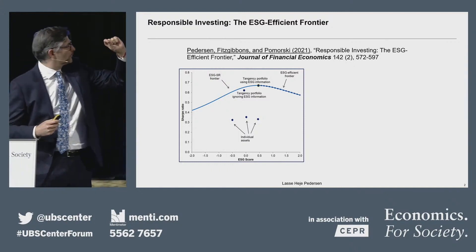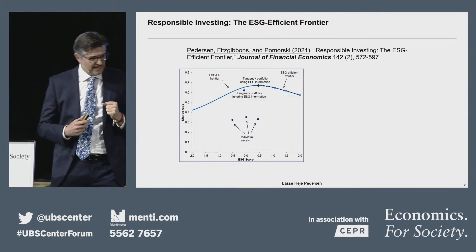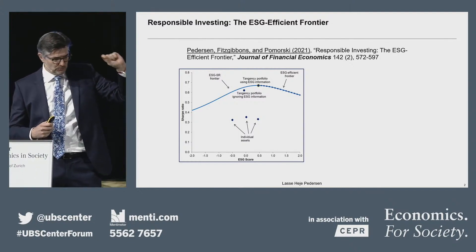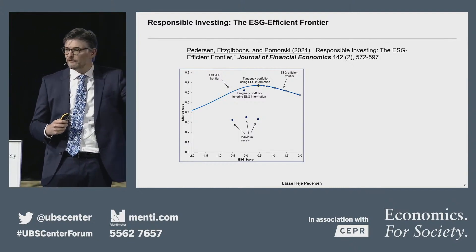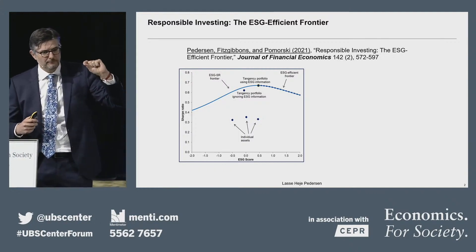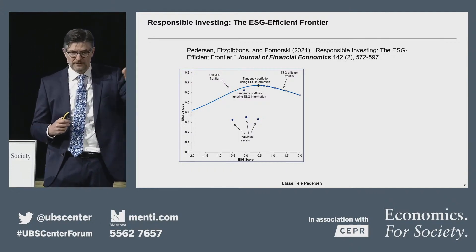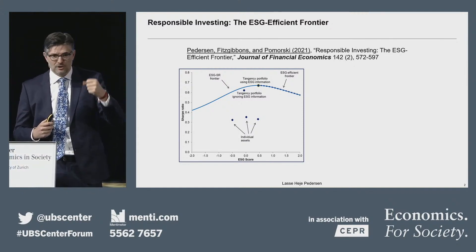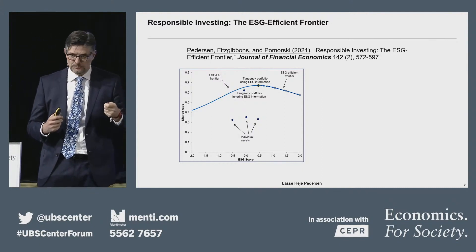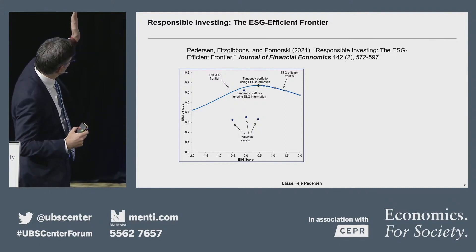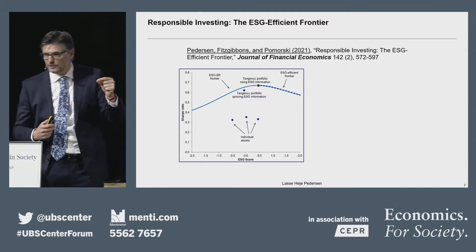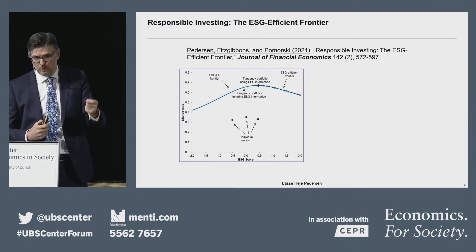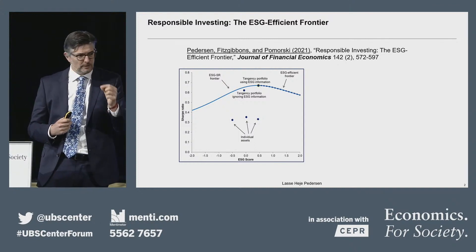That generates this hump-shaped figure. The top of the hump-shaped figure is what we call the tangency portfolio with ESG information — the highest possible Sharpe Ratio you can get, which has some ESG score. Investors who only care about financial return should pick that portfolio. Investors who want a greener portfolio — not because of financial return, but just because they like a green portfolio — should go out on the top right part, what we call the ESG-efficient frontier, accepting a lower Sharpe Ratio in order to have a greener portfolio.